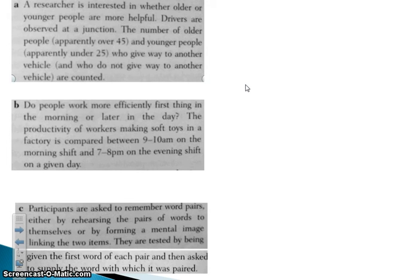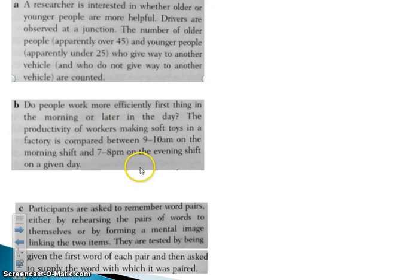In the second example: do people work more efficiently first thing in the morning or later in the day? The productivity of workers making soft toys in a factory is compared between 9 and 10 a.m. on the morning shift and 7 and 8 p.m. on the evening shift on a given day. The IV — what's changing — is whether they were on the morning shift or the evening shift. The DV — what we are measuring, the result — is the productivity: how many toys these particular people made.